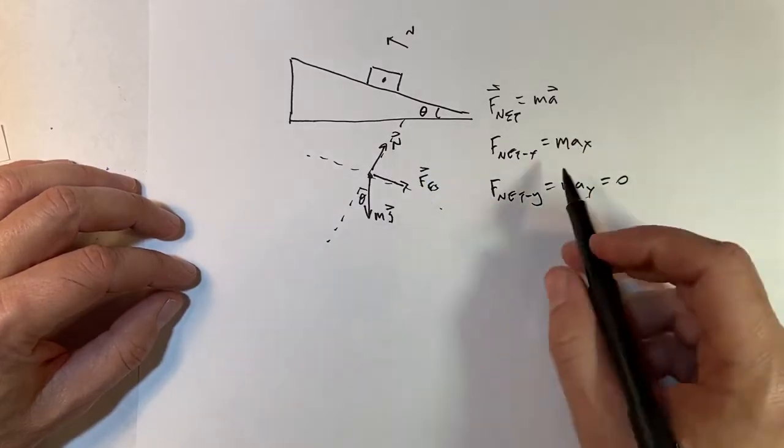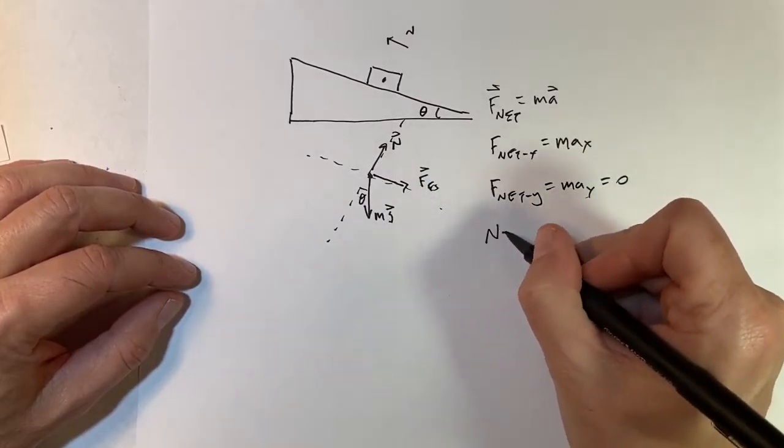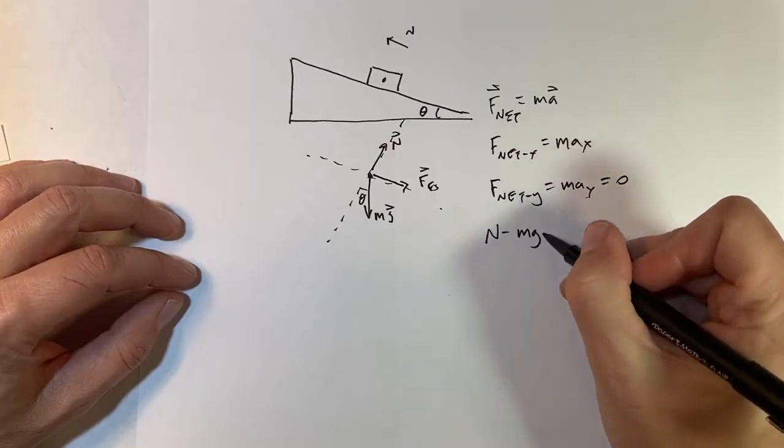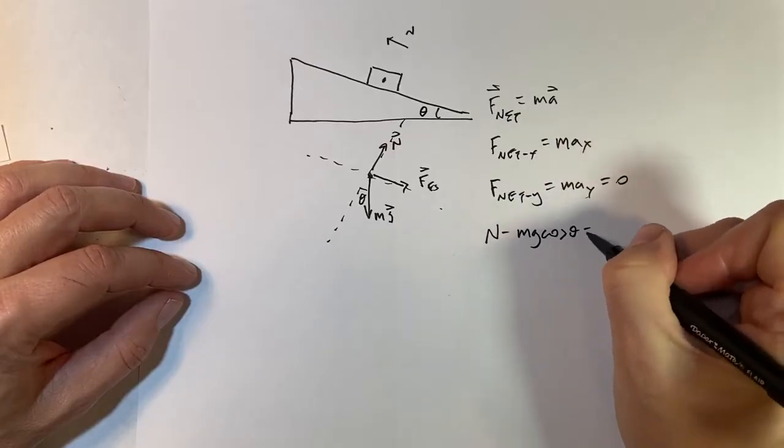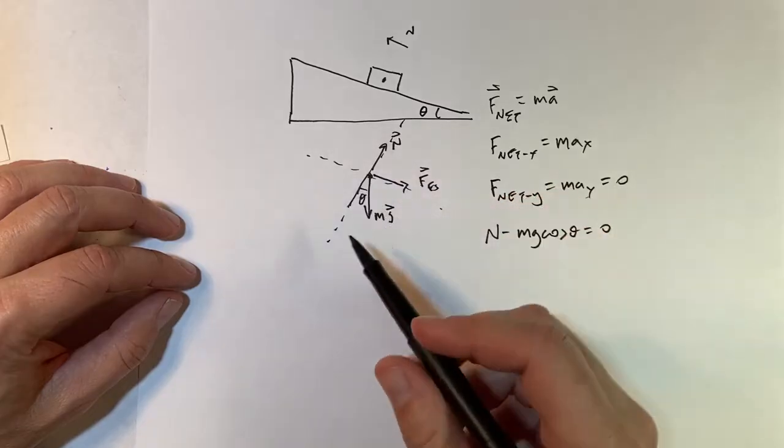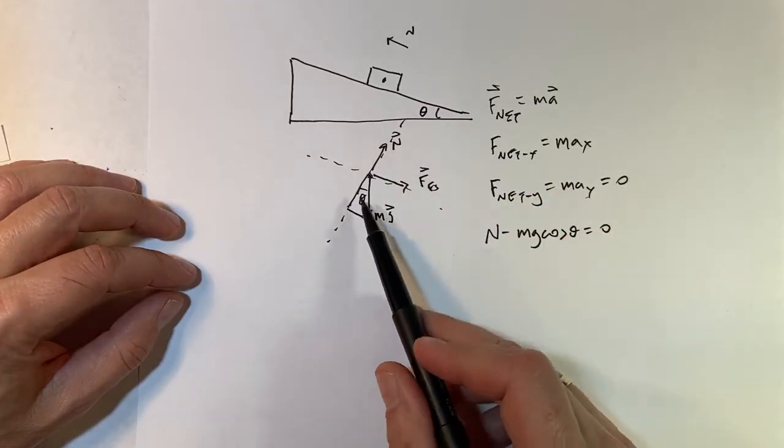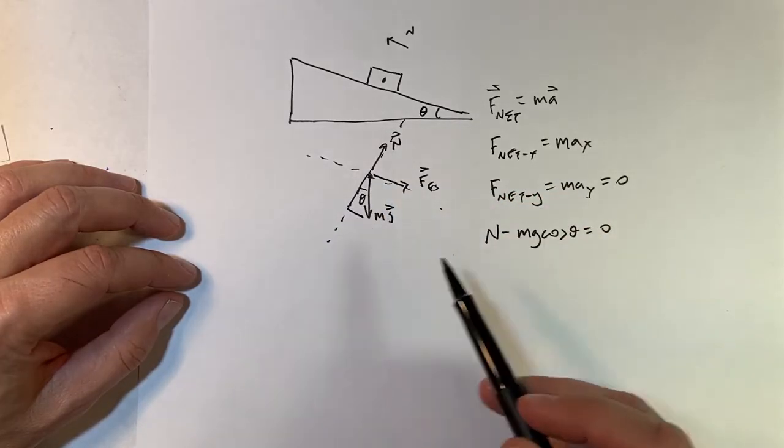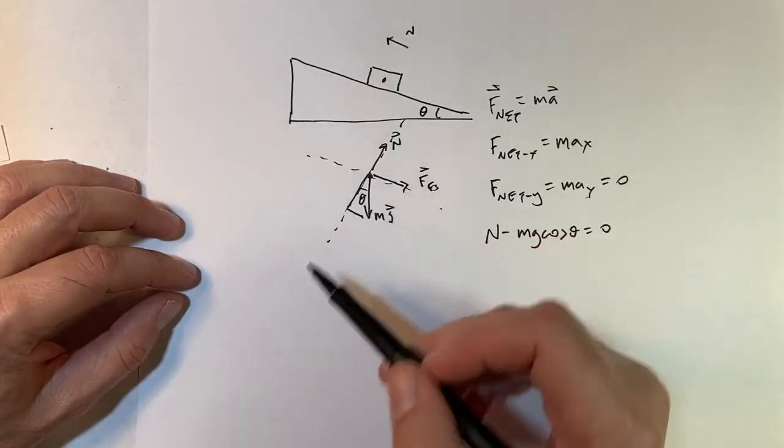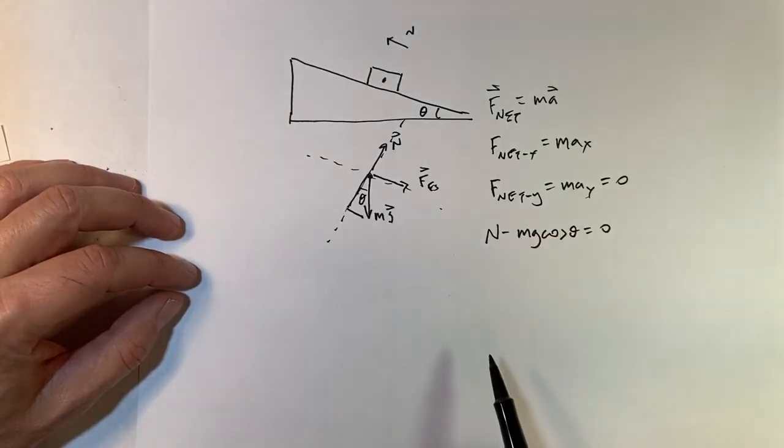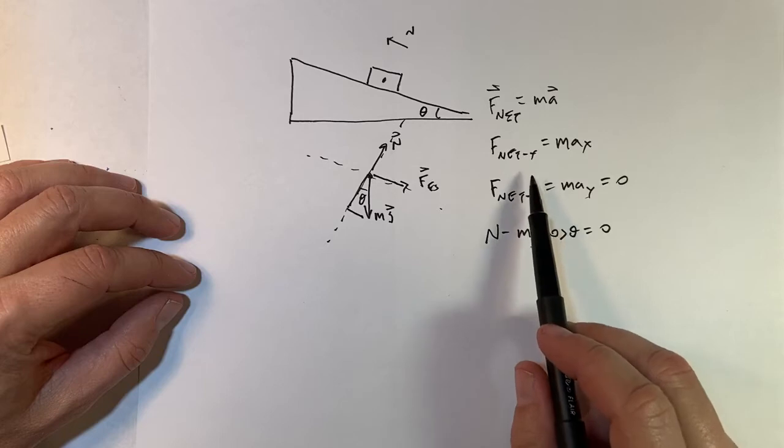So let's just write down our forces. In the y direction, I have n minus mg cosine theta equals zero. So this is my adjacent side of the triangle. This is my opposite side of the triangle. And mg is the hypotenuse. So mg cosine theta is the adjacent side. And it's in the negative y direction.